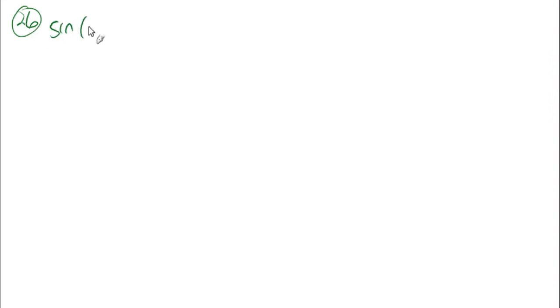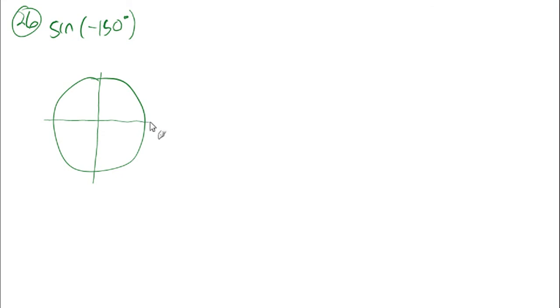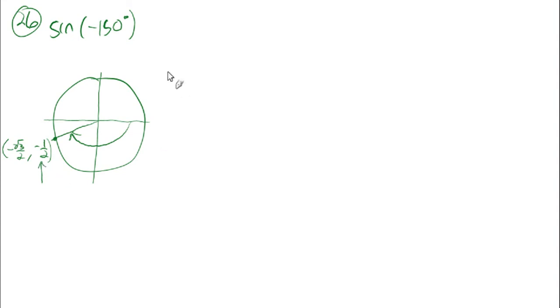The last thing is made really easy by filling out the unit circle. Looking at the sine of negative 150: on our unit circle, negative 150 is way over here. The labels show negative root 3 over 2 and negative 1 half. The sine is negative 1 half. So the sine of negative 150 is negative 1 half — just look at your unit circle.